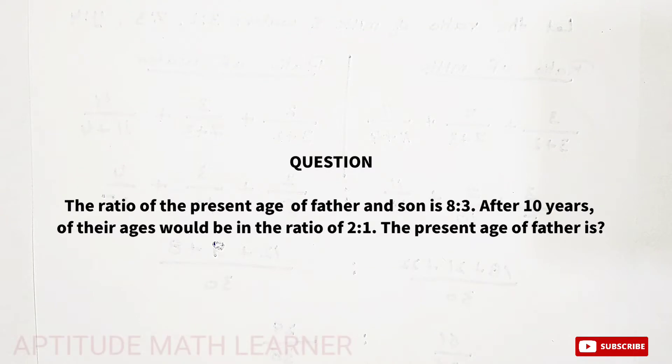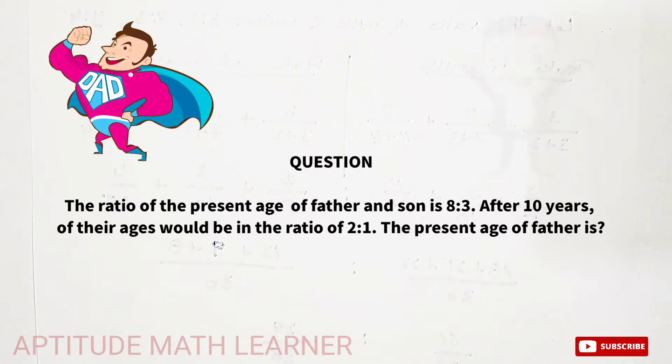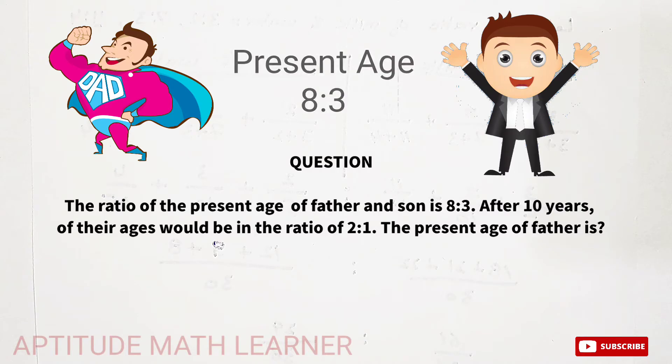Welcome friends to our YouTube channel, Aptitude Math Learner. Today we have a question related to age and ratio. The question is: the ratio of the present age of father and son is 8 is to 3. After 10 years, their ages would be in the ratio 2 is to 1.